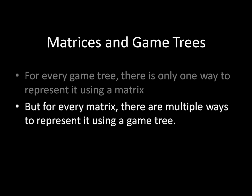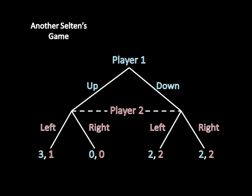Now let's take care of the second part. Every matrix has multiple game trees that could represent it. And I think the easiest way to do this is to simply show you another form of Selten's game.